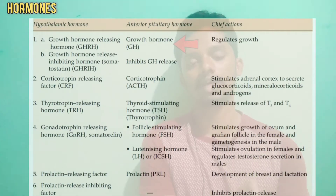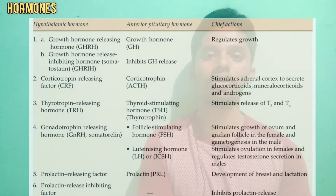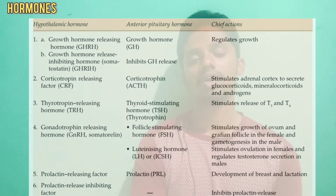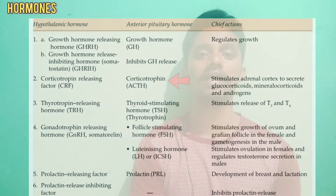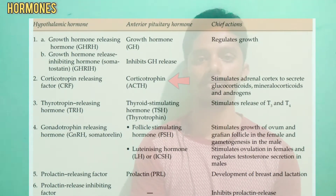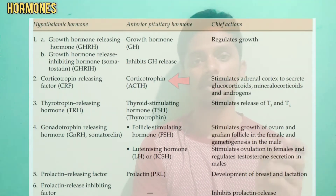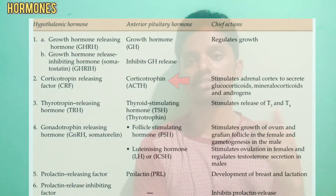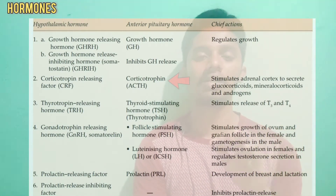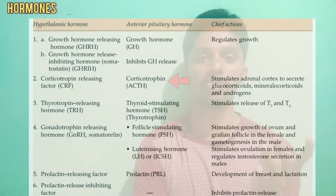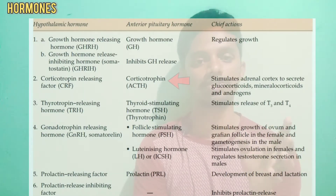The second important hormone released from the anterior pituitary is corticotropin, also known as ACTH — Adrenocorticotropic Hormone. Its main function is to stimulate the adrenal cortex. The adrenal cortex produces three groups: glucocorticoids, mineralocorticoids, and androgens, which are male sex hormones.